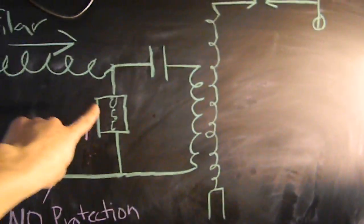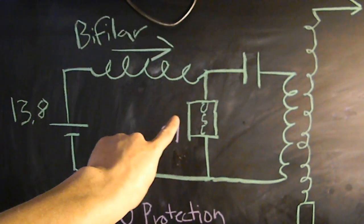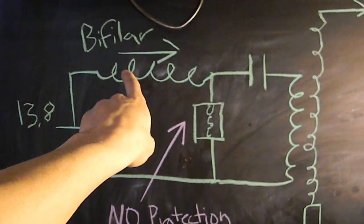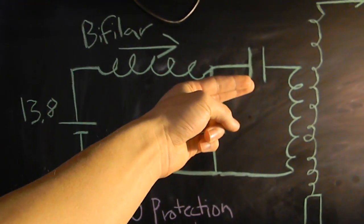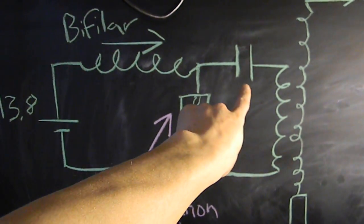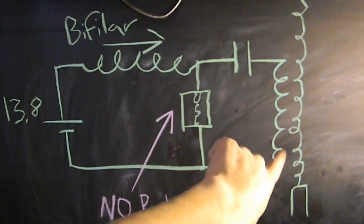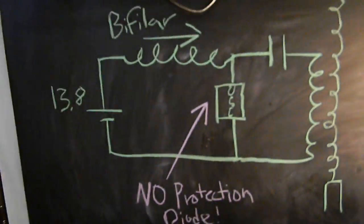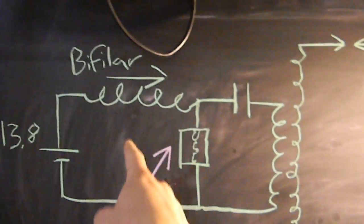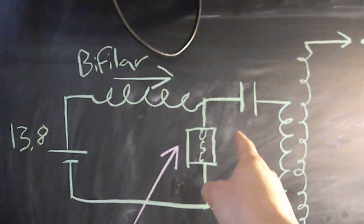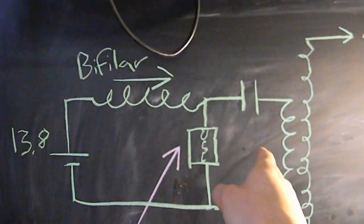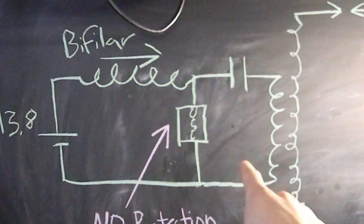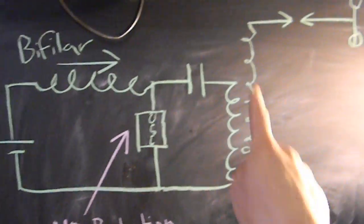So we pulse this coil with the oscillator and then the energy, the momentum that's stored in the magnetic field, will go into this capacitor and we get current flowing in here. Now the goal is to have these two reactances, the capacitor and the inductor, at resonance at the resonance of this.